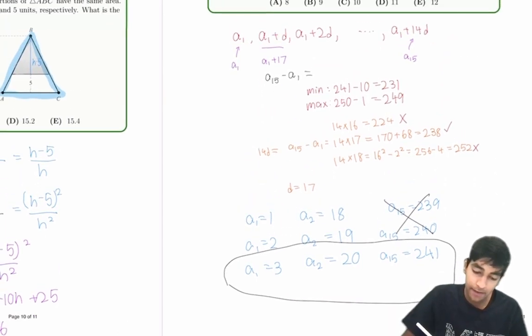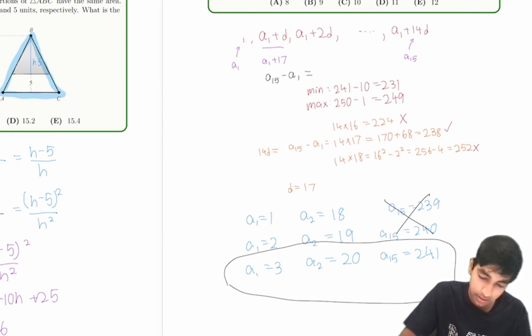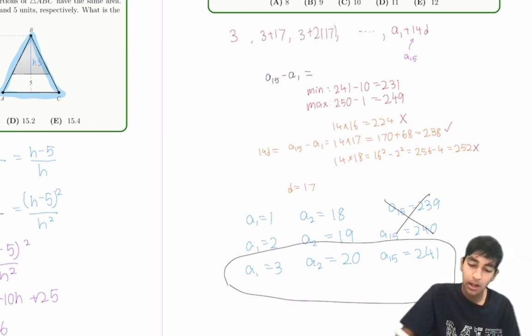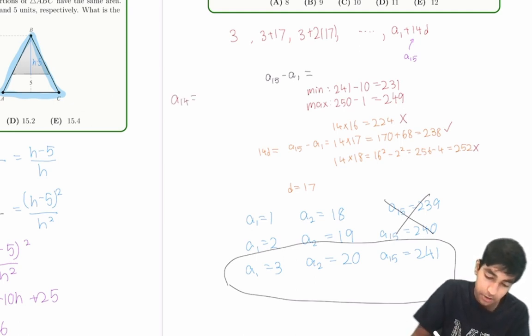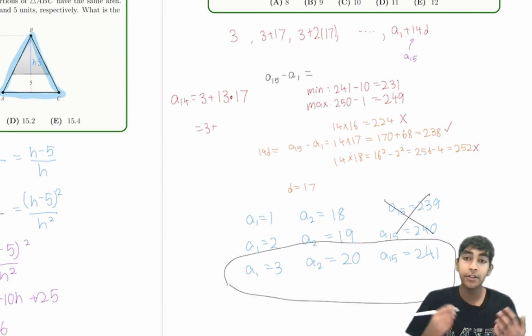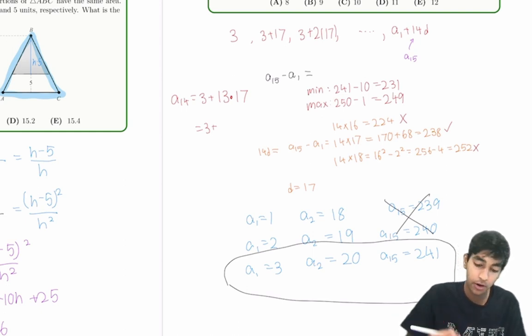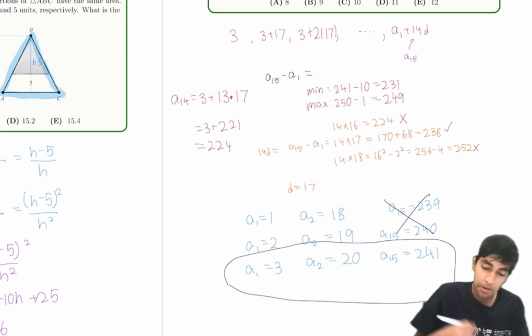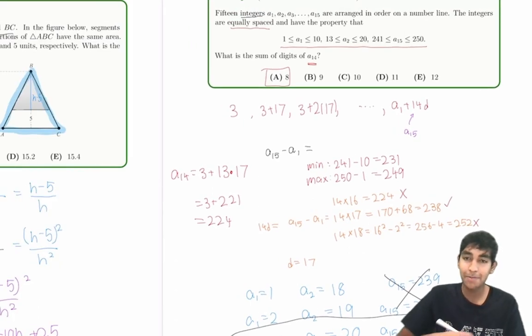So we know our sequence must be a1 equals 3. And then the common difference we already discovered was 17. So this will be 3, and then 3 plus 17, and then 3 plus 2 times 17, and so on. Now we can just use the arithmetic sequence formula to find a14. So a14 is just a1, which is 3, plus 13 times the common difference, which is 17. This is 3 plus 13 times 17. Another mental metric here: that's 15 minus 2 times 15 plus 2, so 15 squared minus 4, 225 minus 4, that's 221. So their sum is 224. The sum of digits of a14 is then 8. So 8 is the answer for this question. A great problem. Hope you enjoyed.